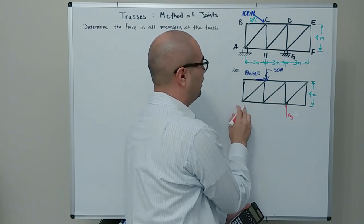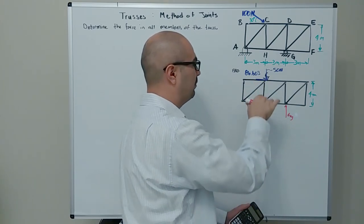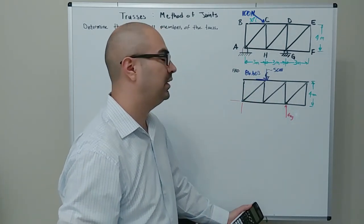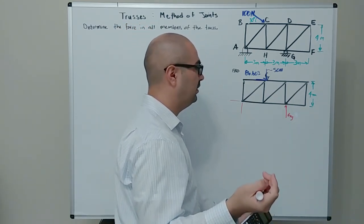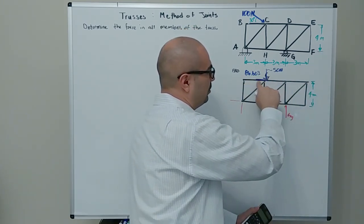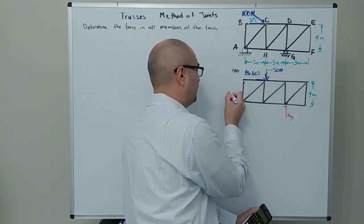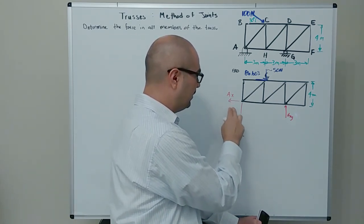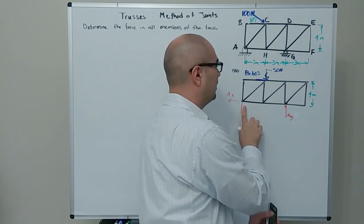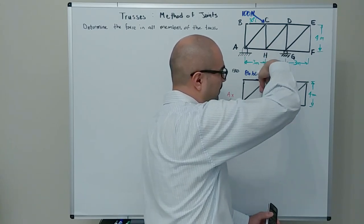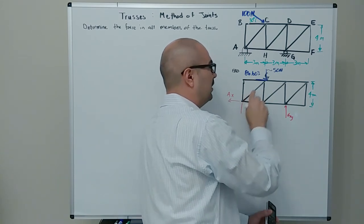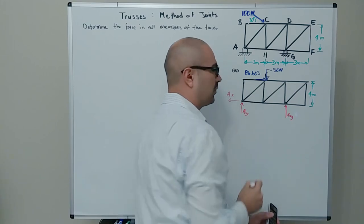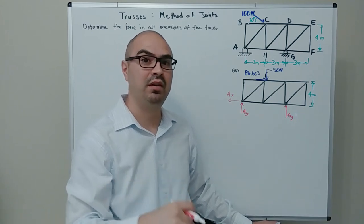At point A, the pin allows rotation but prevents translation in x or y. So we need forces in both x and y at A. In the x direction, the only applied force points one way, so the reaction Ax points opposite. For the y component, Ay — we'll guess it points up and let the equations of equilibrium confirm or correct that assumption.